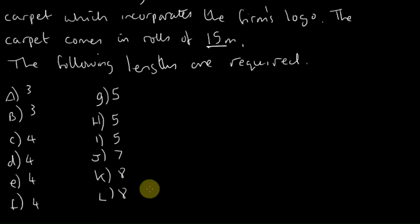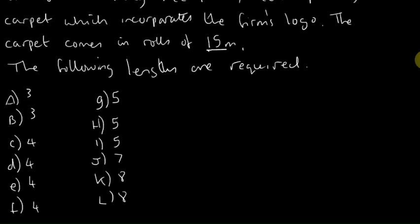So we've got a list of lengths of carpet here, so A to L, and like we did in the previous example, the question is determine how the lengths should be cut from the rolls using the first fit algorithm A to L.